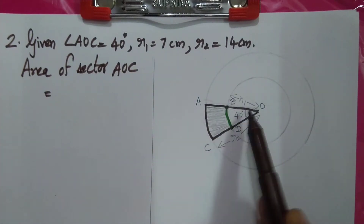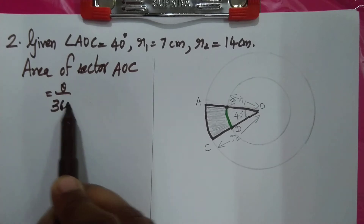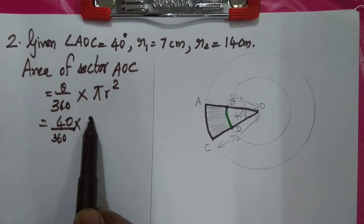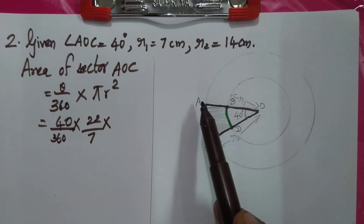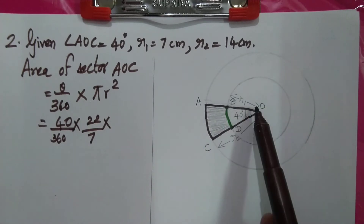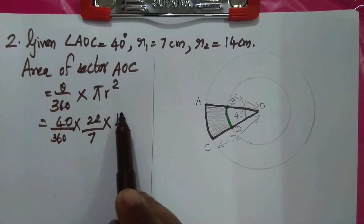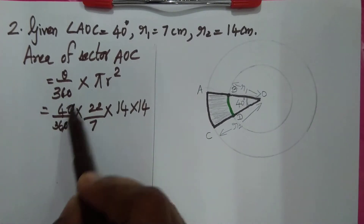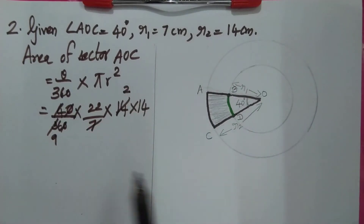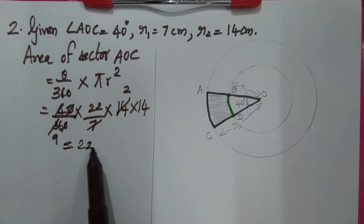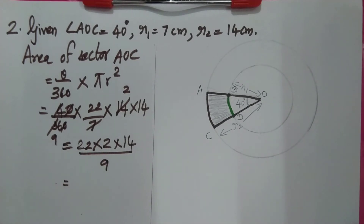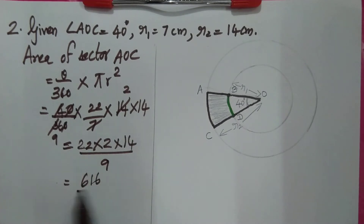Area of sector AOC equals theta by 360 into pi r squared. Theta is 40, so 40 by 360 into 22 by 7 into 14 squared. Simplifying: 40 by 360 cancels, 7 cancels with 14, giving 22 into 2 into 14 by 9, which equals 616 by 9 cm².